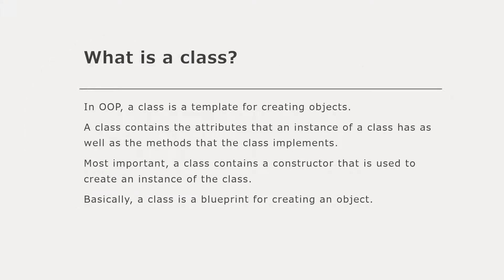So first, what is a class? In OOP, a class is a template for creating objects. A class contains attributes, methods, and a constructor. The attributes are the parts of the class that contain the data. The constructor is what is used to create an instance of a class, and the methods are just the functions that a class implements. A class is pretty much just a blueprint — a set of instructions the computer follows to create an object.